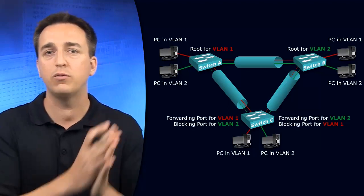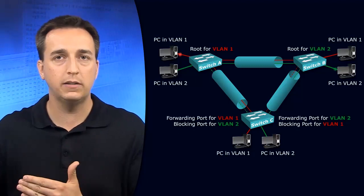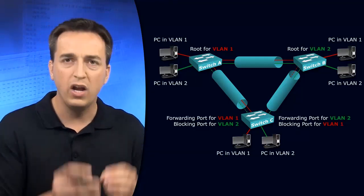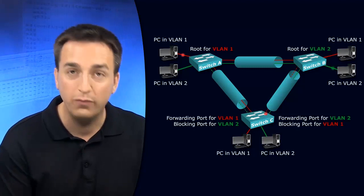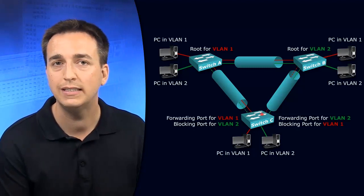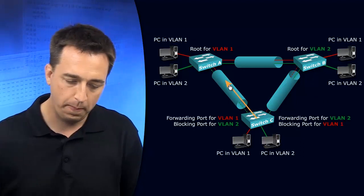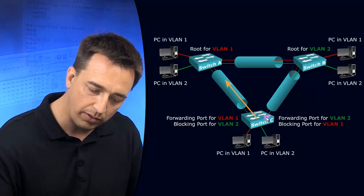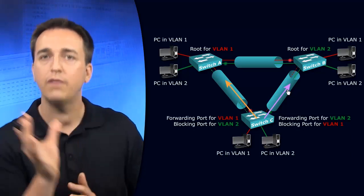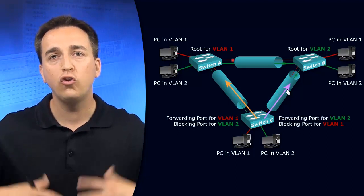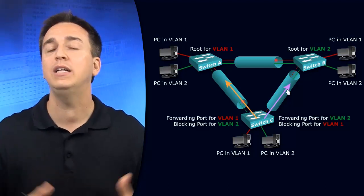So instead of having all the traffic flow in the same direction using all the same links in the topology, you can now utilize other links. Instead of blocking ports on a physical port-by-port basis, when we're dealing with per VLAN Spanning Tree Plus, we're blocking on a logical VLAN-by-VLAN basis. Examining this topology, VLAN 1 traffic goes over one trunk link, VLAN 2 traffic goes up the other trunk link — we're load balancing and utilizing all our links.